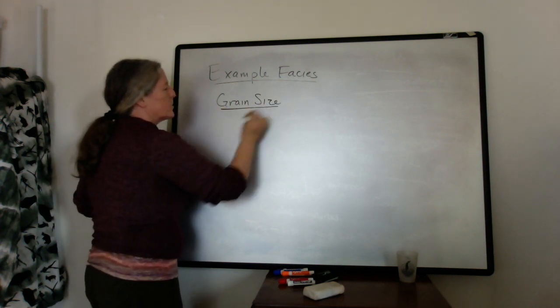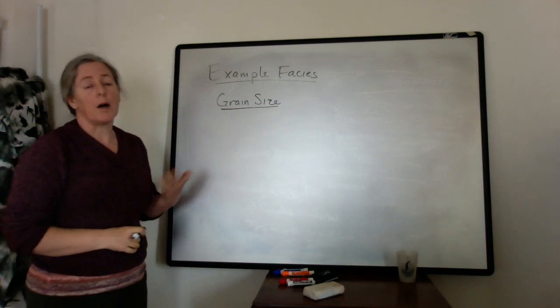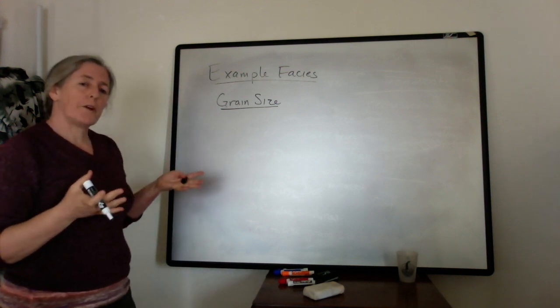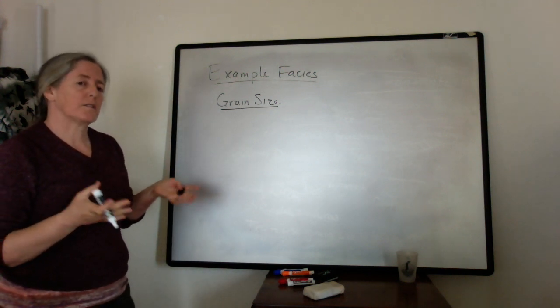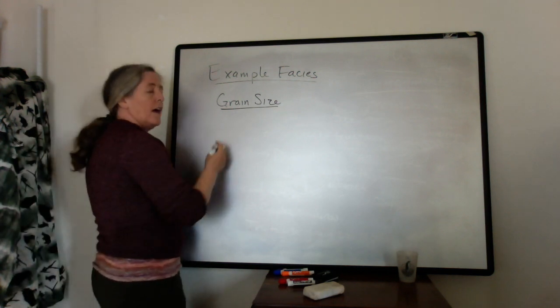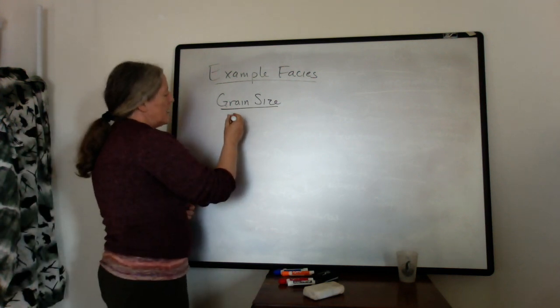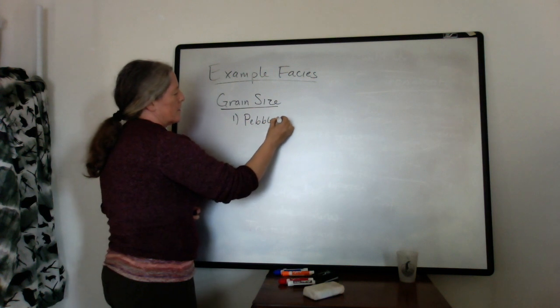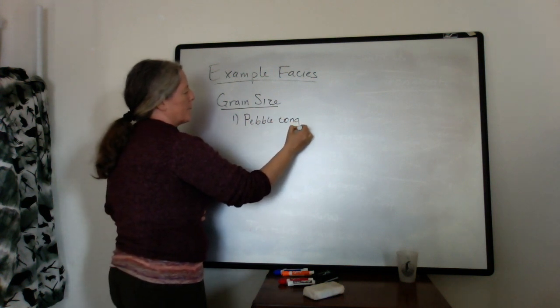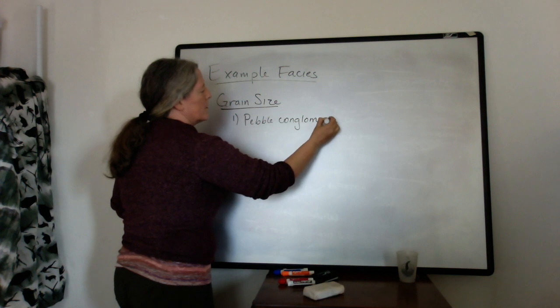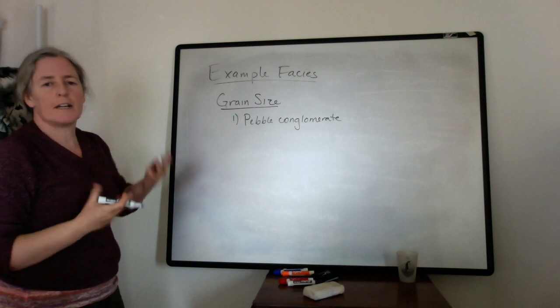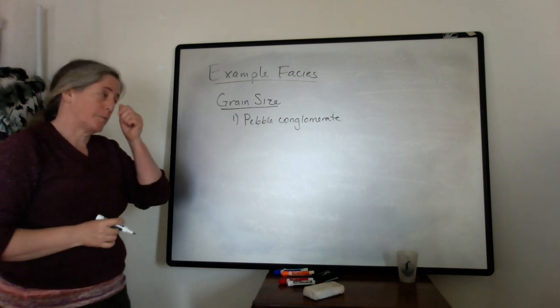Say I was looking at some sands deposited by a river, or sandstones. At the base of the channel where the Reynolds number is highest because the flow is deepest and that's where the flow is fastest, I might have pebbles. So one of my facies might be a pebble conglomerate. A conglomerate is the rock made up of particles, mostly pebble, and it can have sand between the sides of it.